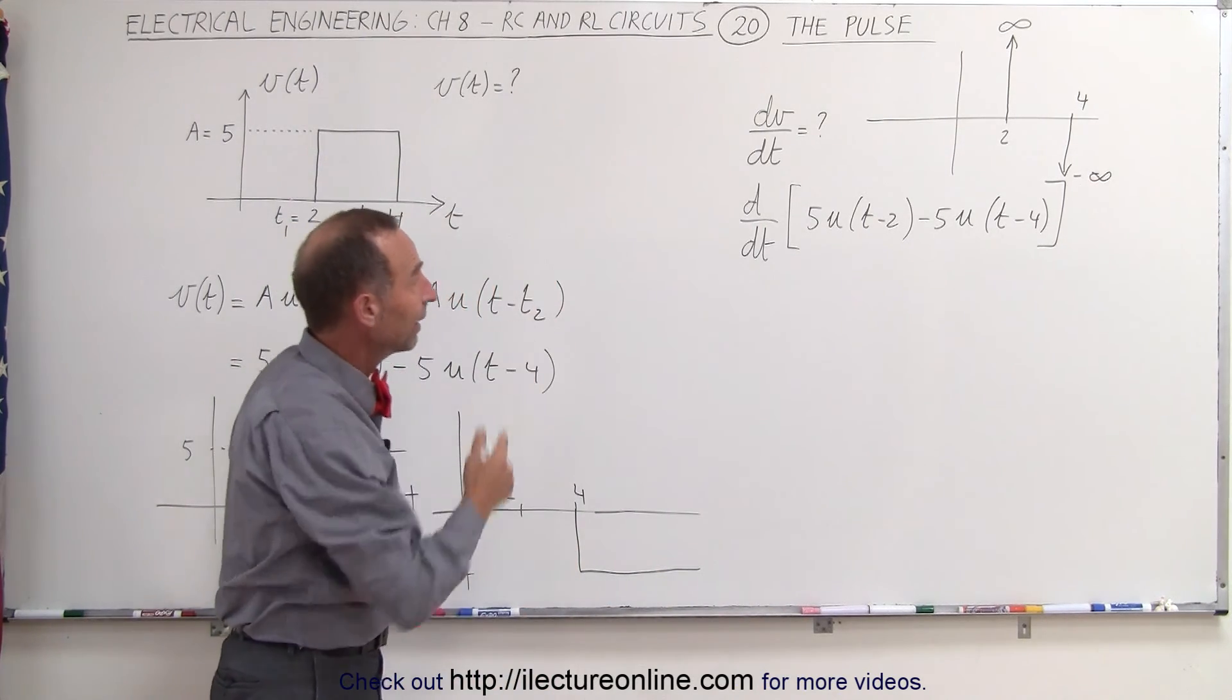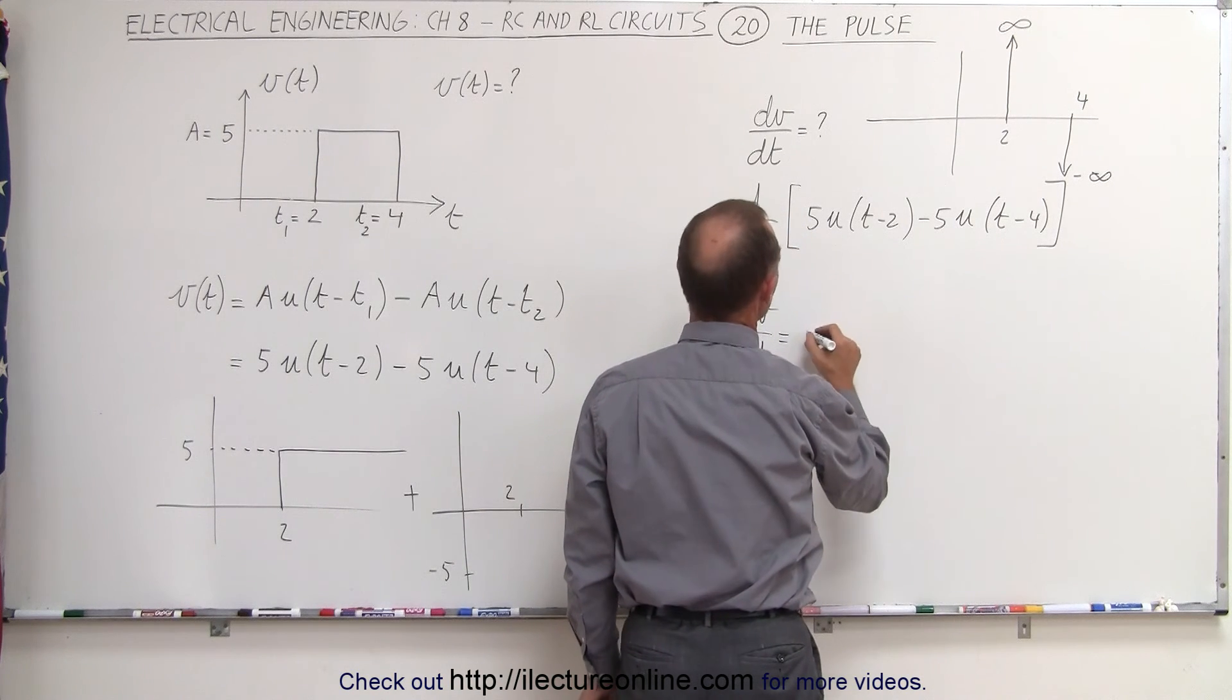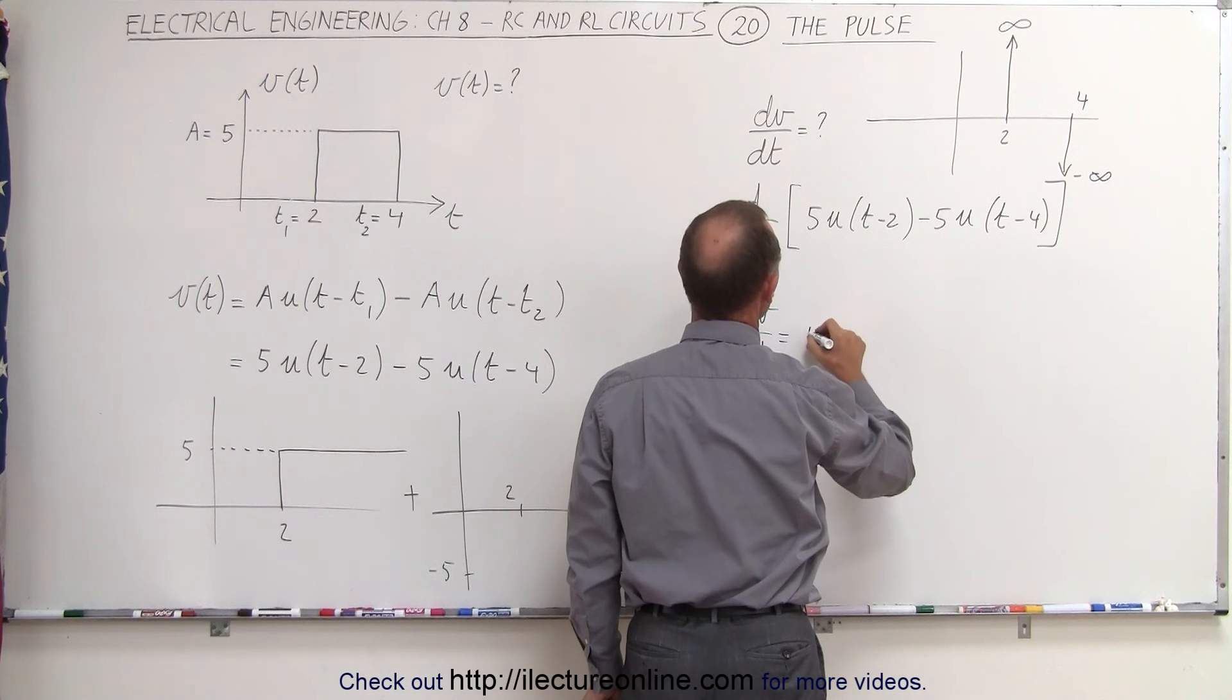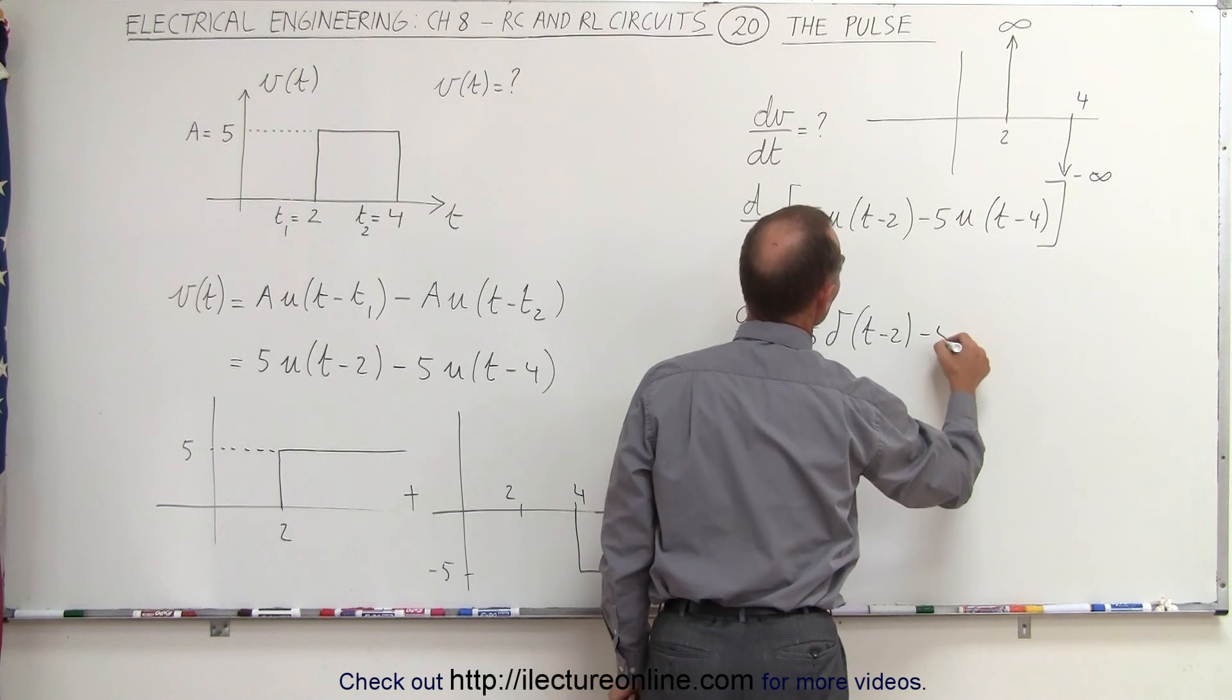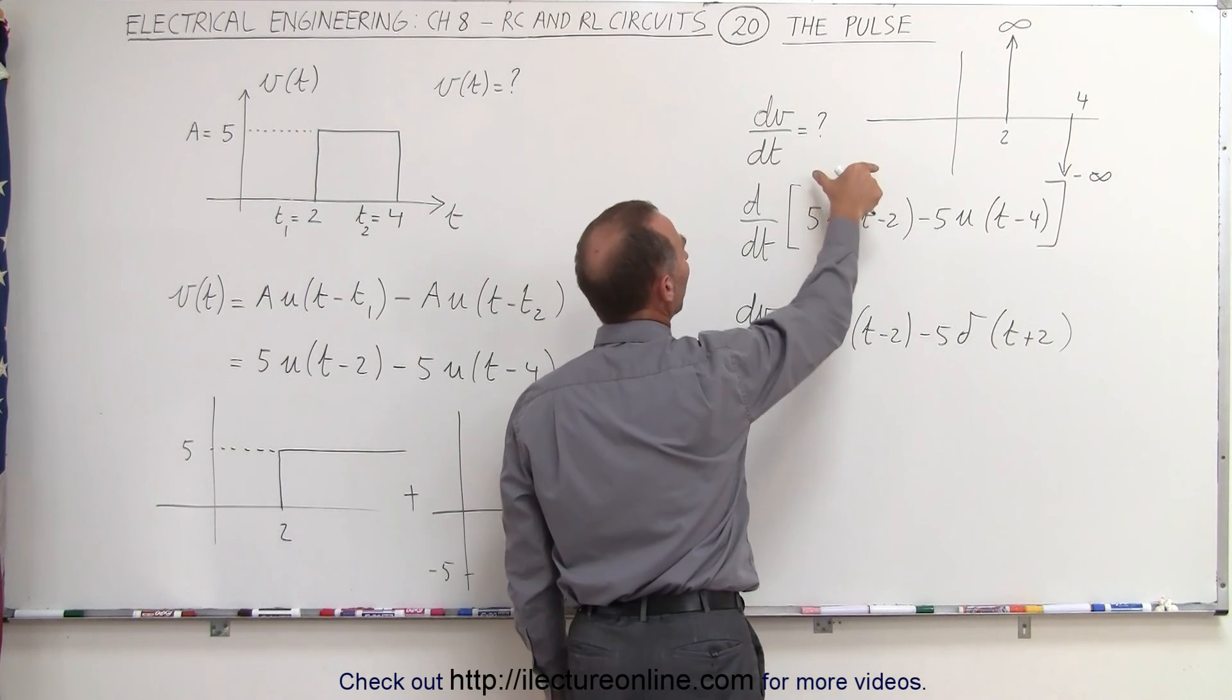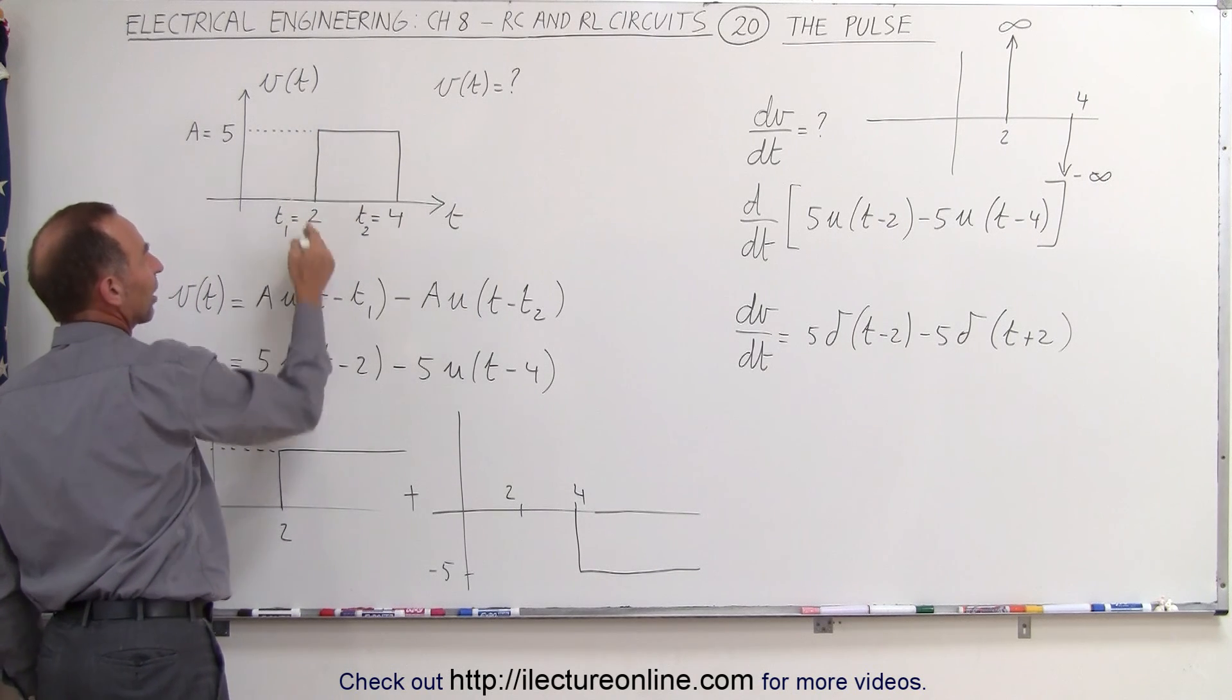And so if we want to write that as the sum of two delta functions, we can then say that dv dt would be equal to... and don't forget that since we're multiplying times five, what we're going to say is that this would be equal to five times the delta function of t minus two, minus five times the delta function of t plus two. And this would be the derivative of our original function that represents the voltage input, which is a step function that only lasts for two seconds from t equals two to t equals four seconds.